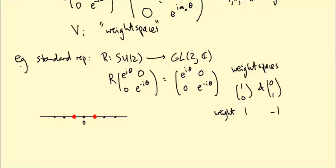So that's a way of depicting this weight space decomposition. We have a summand spanned by the vector one zero with weight one, and a summand spanned by the vector zero one with weight minus one.